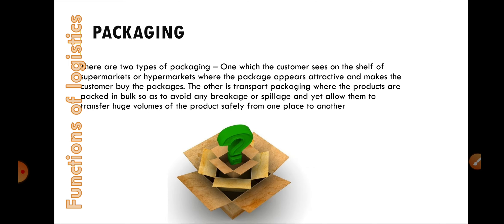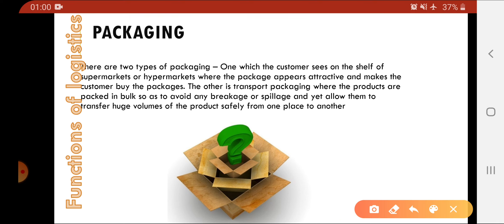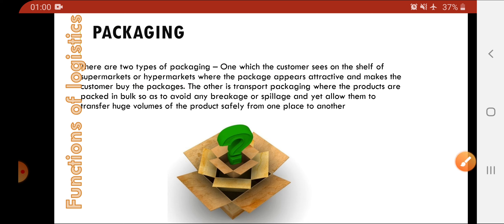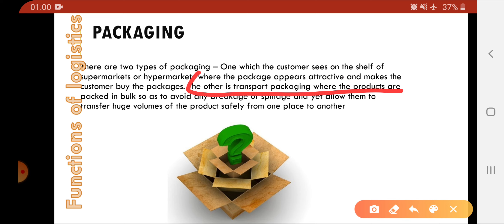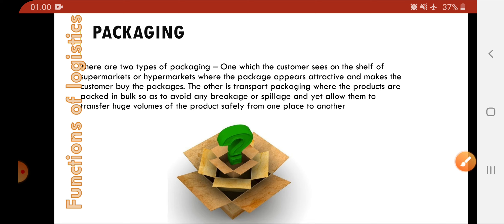Next, in packaging, we have to take care of two things. First is the packaging that customers see on the shelves of supermarkets or hypermarkets — the attractive packaging of the product. The other is packaging where products are packed in bulk. The main use of this bulk packaging is to avoid the breakage and spillage of the products.